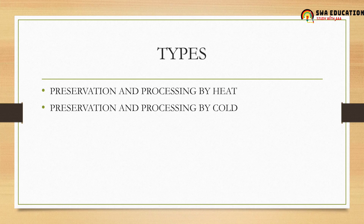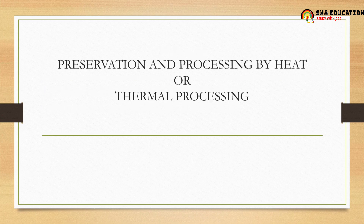Under each category we have a number of types, so let's learn them one by one. In this class we will learn about preservation and processing by heat. This is also termed as thermal processing, and it is one of the most common methods. Even at home, we usually preserve food by heating — it is one of the traditional methods.